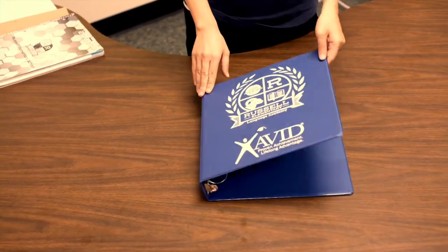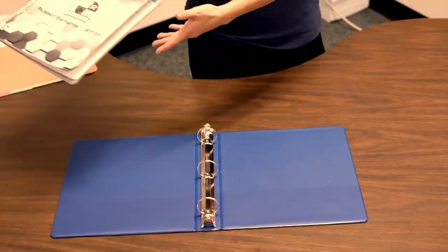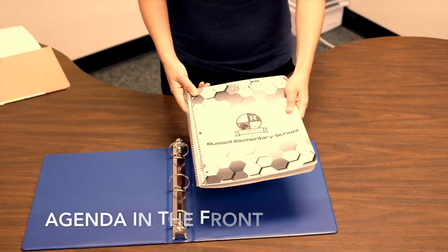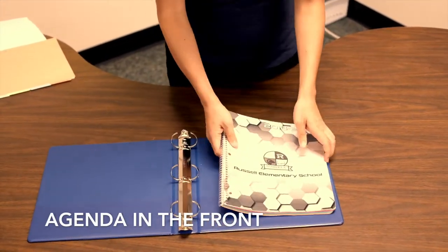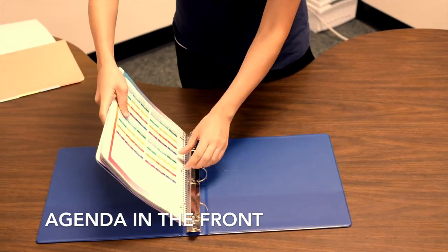Let's look inside. First we need to have a spot for our agenda. It always goes in the front of our binder. So we're going to put them in the rings.